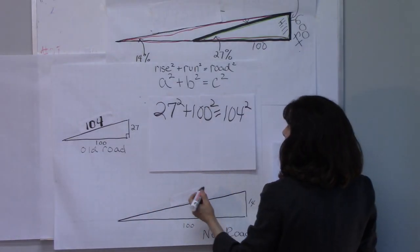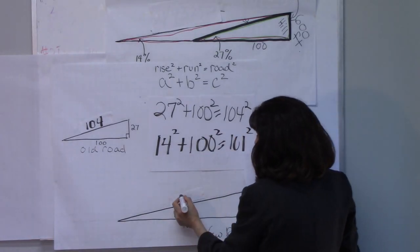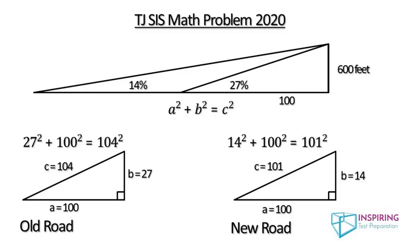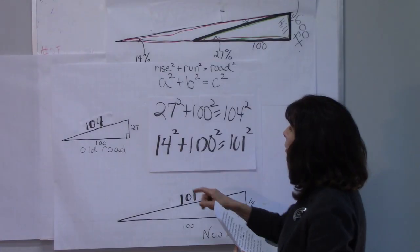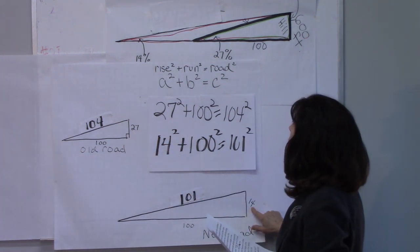Now the new road has a rise of 14 and we square that and we have a run of 100 and we square that and we will get 101 for its relative ratio. Now remember, these are not the lengths of the road, but just their proportional lengths relative to the 27 percent grade and the 14 percent grade.